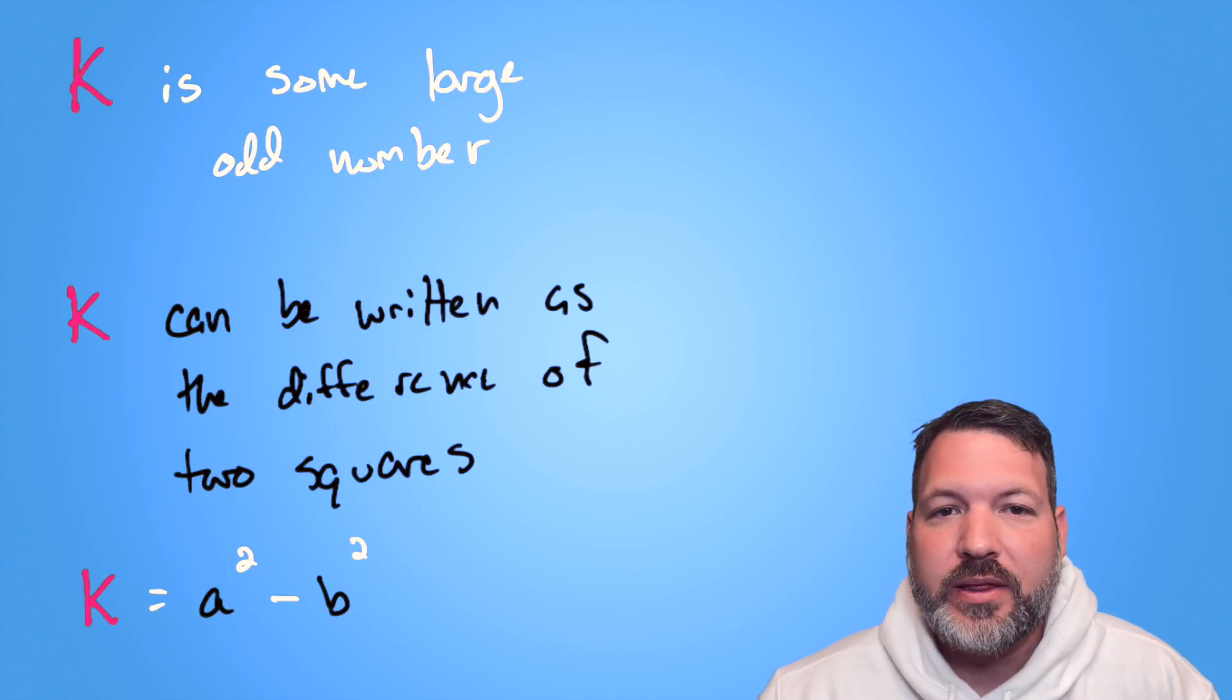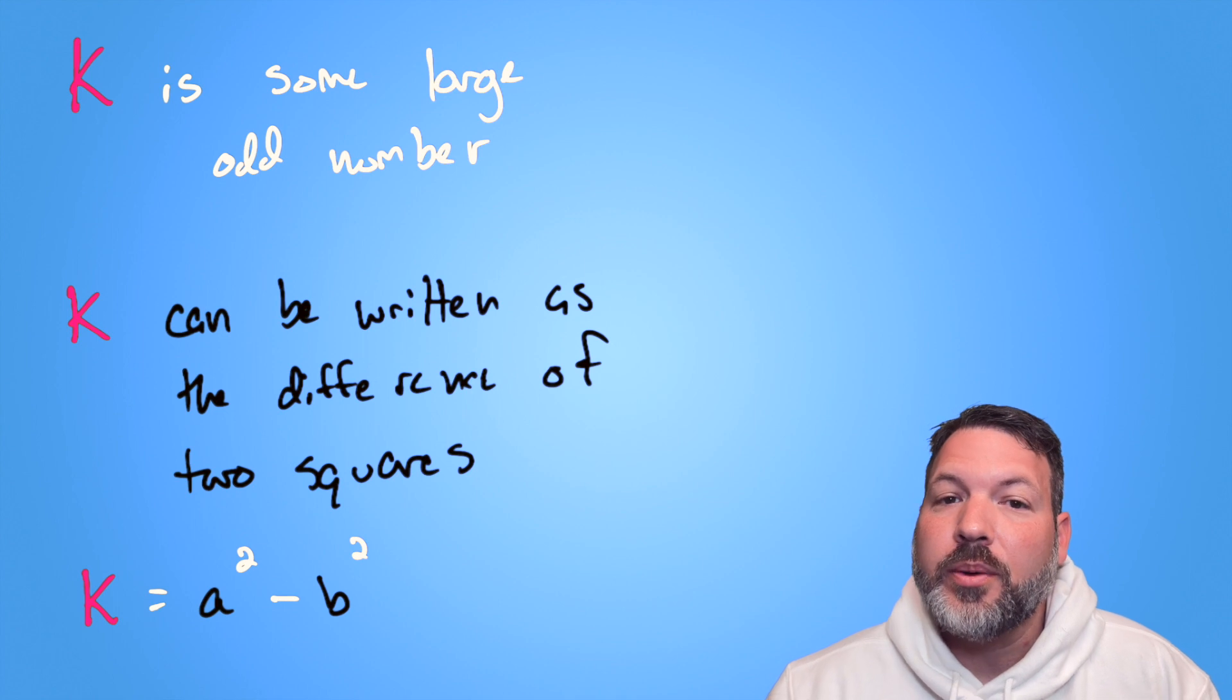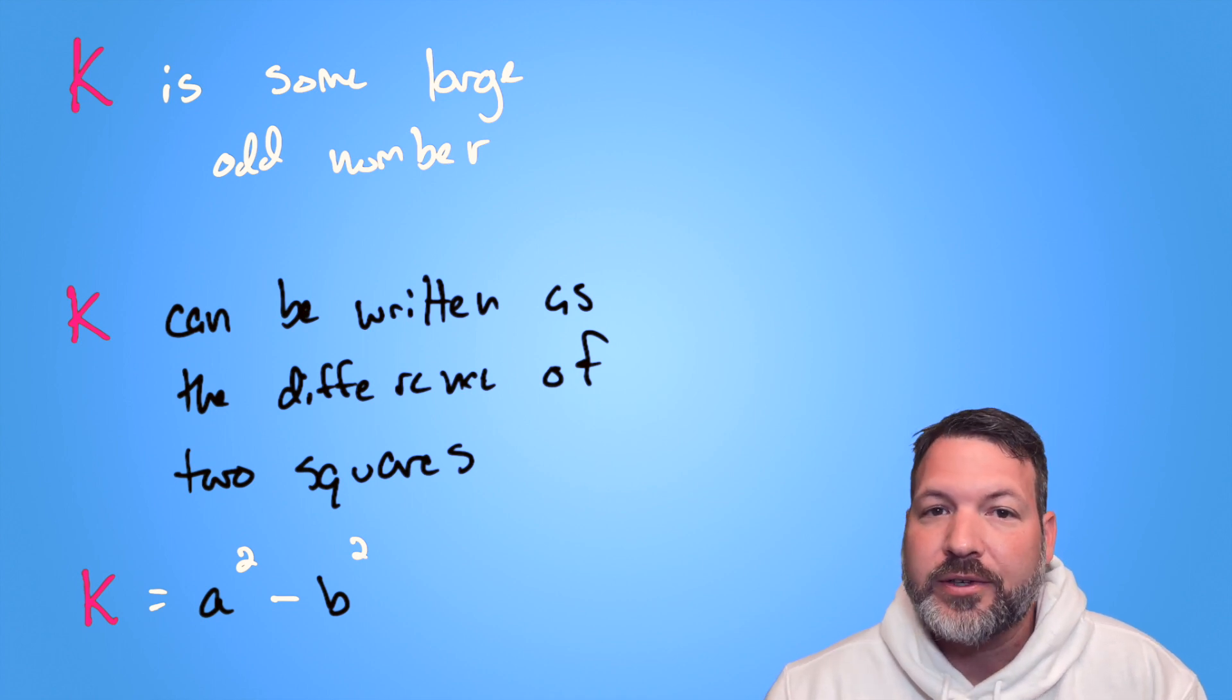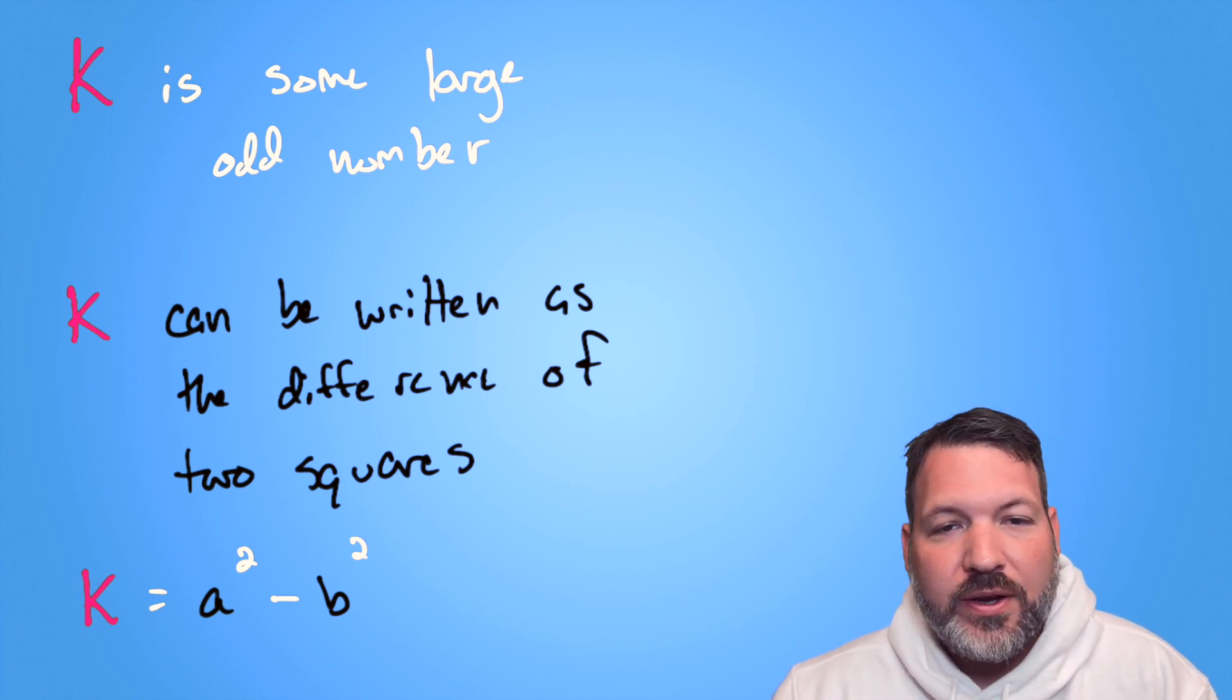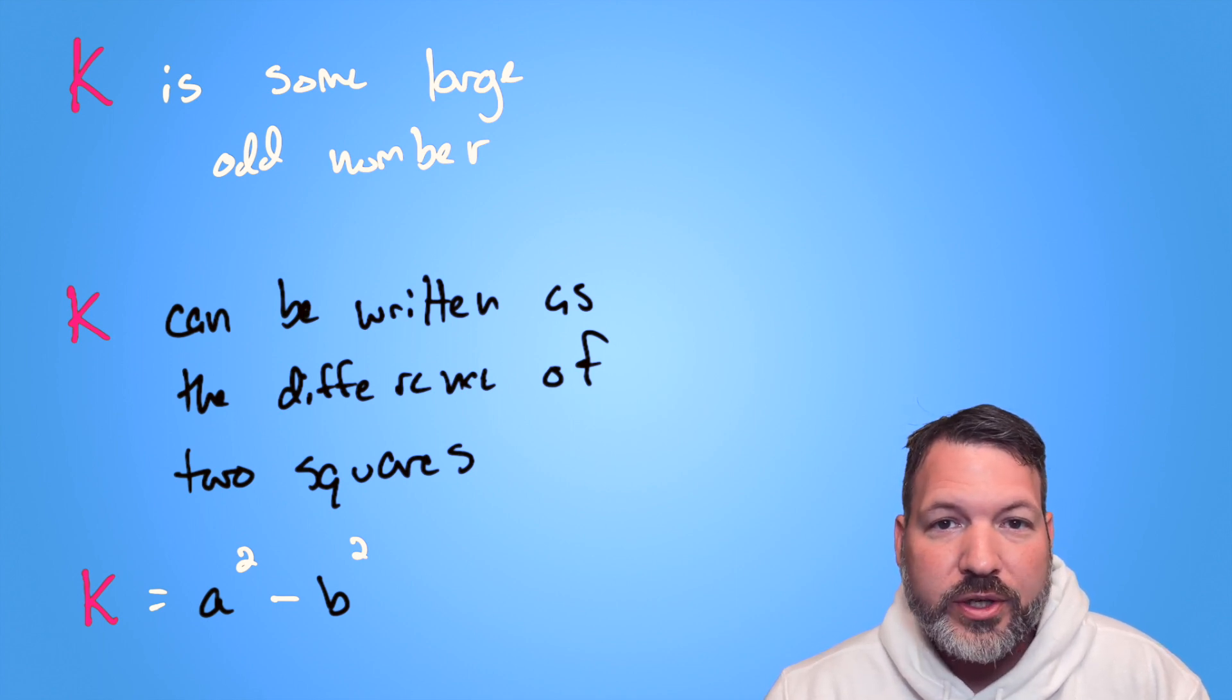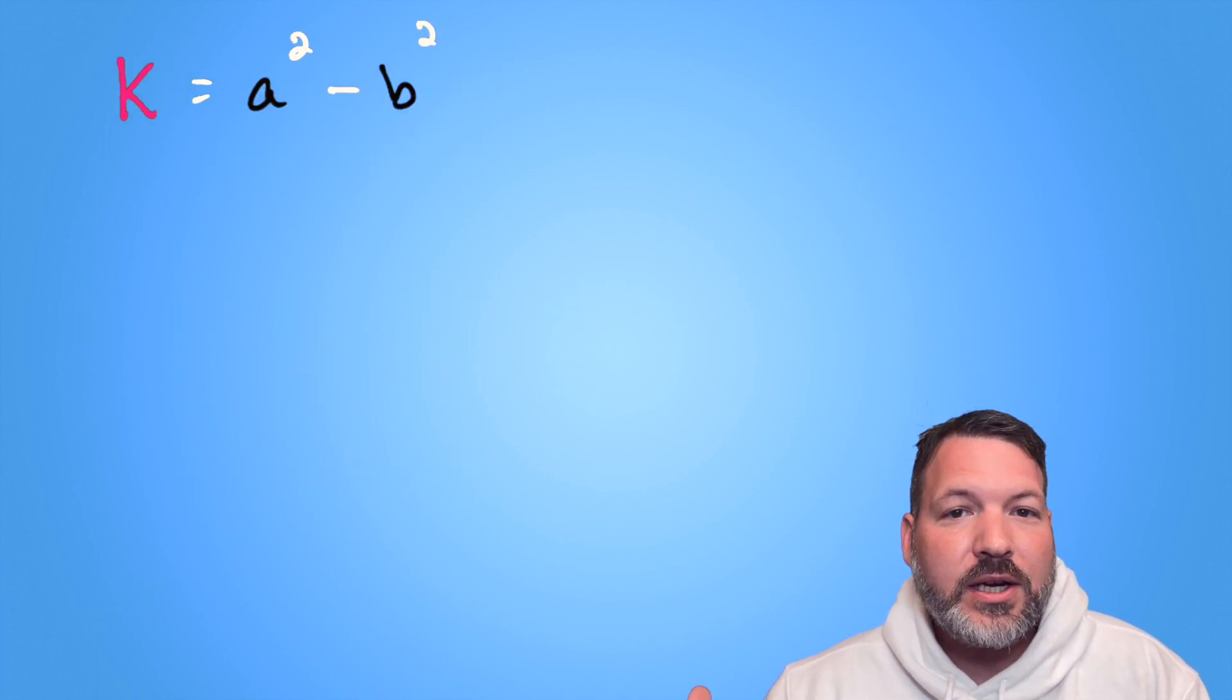The algorithm works like this. Imagine you're looking at some odd number and you don't know whether that odd number is prime or not. Of course, every number can be written as one times itself. So you could factor it that way. But you want to figure out, is there another way that you could factor it? Every single odd number is the difference between two squares. Or in symbols, we can say that k, some large odd number we're going to select, must be equal to a squared minus b squared.